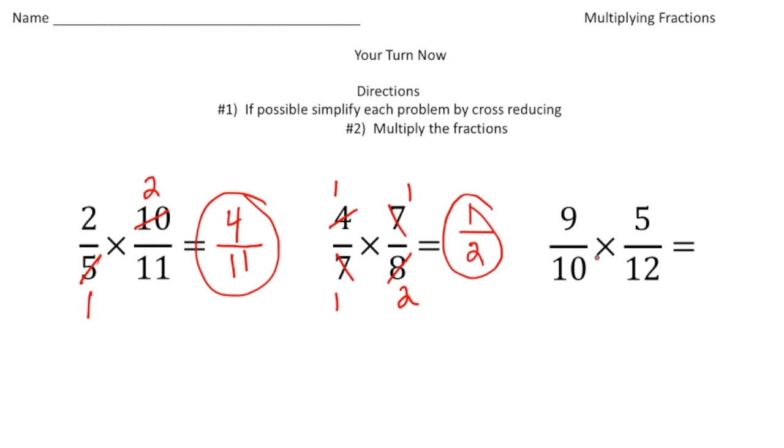The last one, 9/10 times 5/12. This time again I can reduce twice. 5 and 10 have a greatest common factor of 5. So 5 goes into 5 once and 5 goes into 10 twice. 9 and 12 has a greatest common factor of 3. 3 goes into 9 three times and 3 goes into 12 four times. Now we can multiply. 3 times 1 is 3, and 2 times 4 is 8. Our answer is 3/8.